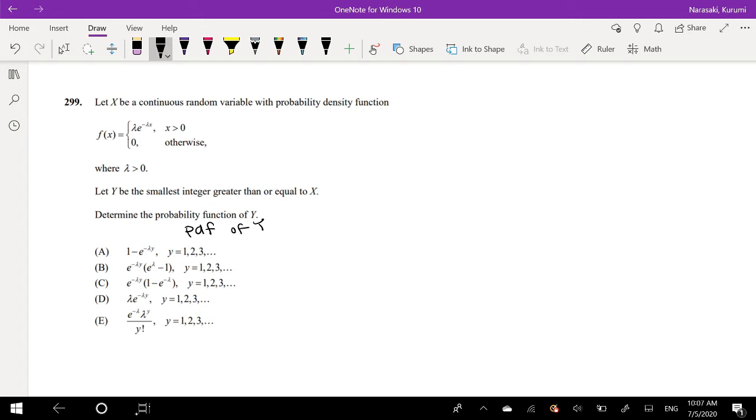Okay, so Maniteles' math lab did a really good example of what y would be. Because this is a new random variable, right? It's defined to be the smallest integer greater than or equal to x. So for example, if x is 0.5, then y is equal to 1, because it's the smallest integer greater than or equal to x. But if x is equal to 1, y could also be 1, right? Because it's greater than or equal to.